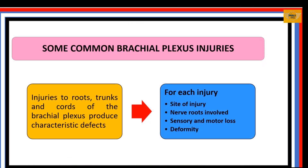In our consideration of brachial plexus injuries, we will consider injuries at the root, trunk, and cords. For each injury we'll identify the site, the specific nerves involved, the cutaneous and motor losses, and any resulting deformities.